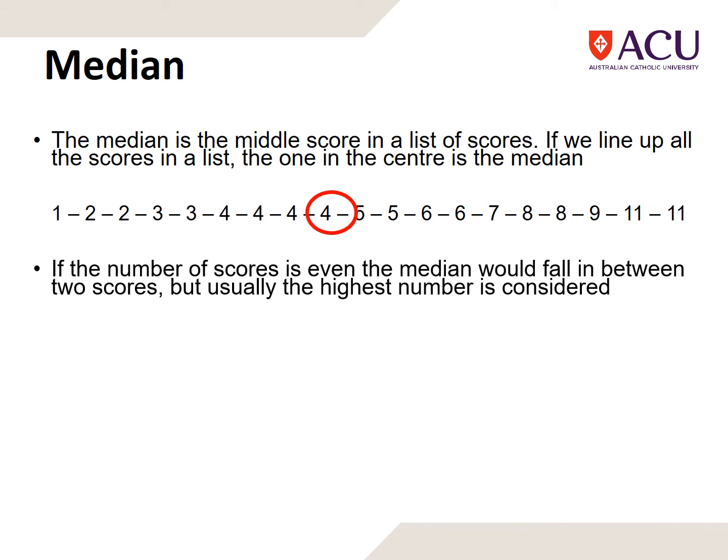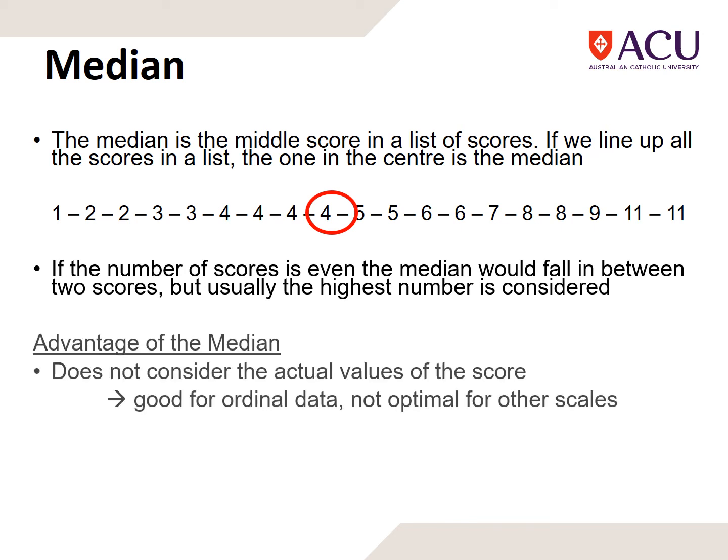If the number of scores is even, the median falls between the two scores, but it's usually the highest number considered.